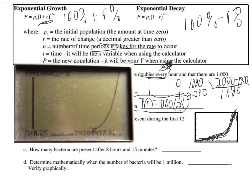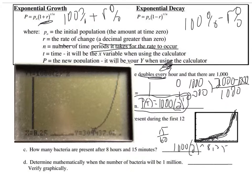The next question asks how many bacteria will be present after 8 hours and 15 minutes. That's 8.25 hours, because 15 minutes divided by 60 minutes per hour is a quarter. I could substitute in 1000 times 2 raised to the 8.25, or I can use the trace feature on the calculator and type in 8.25. I got approximately 304,437 bacteria.